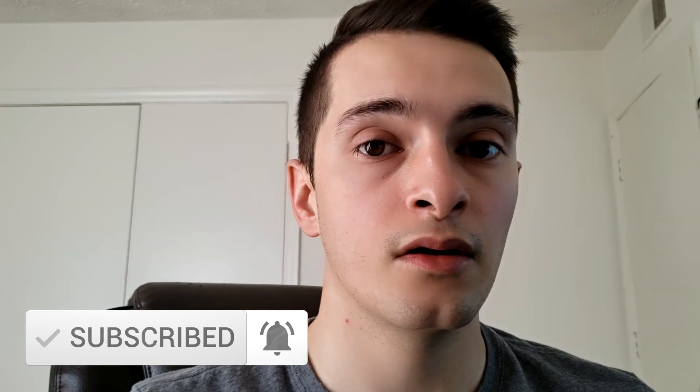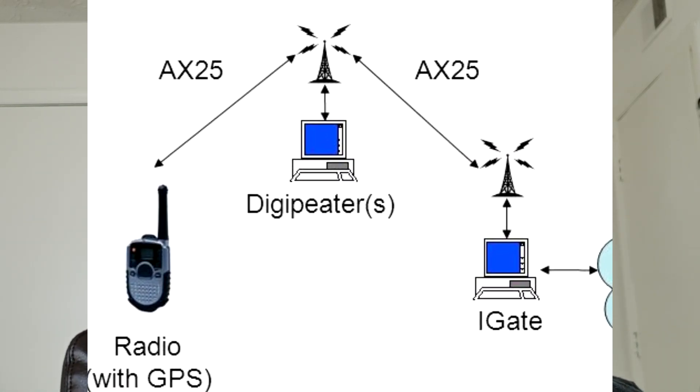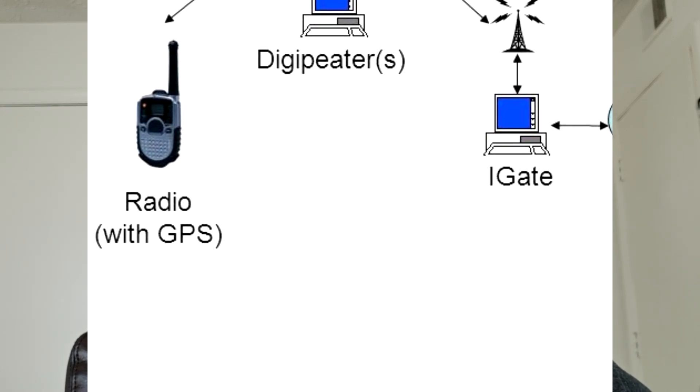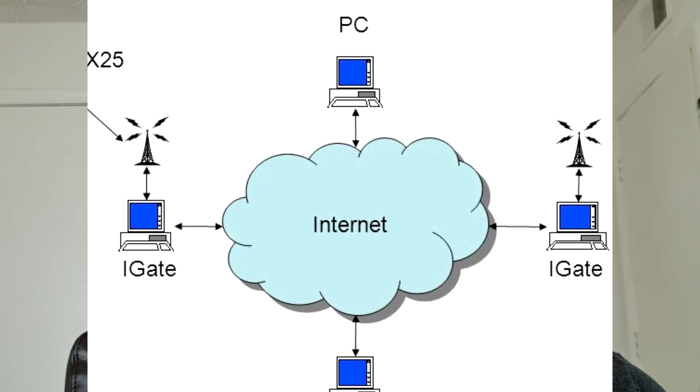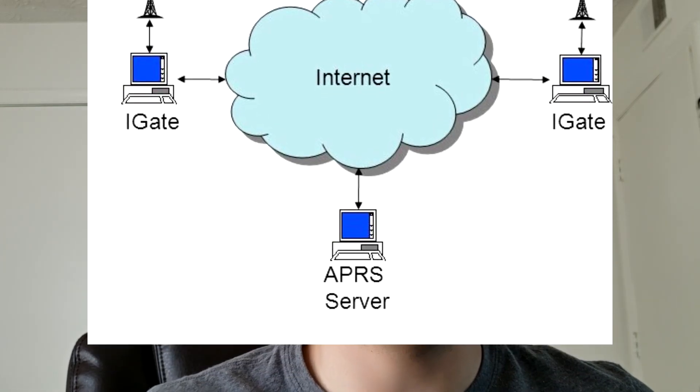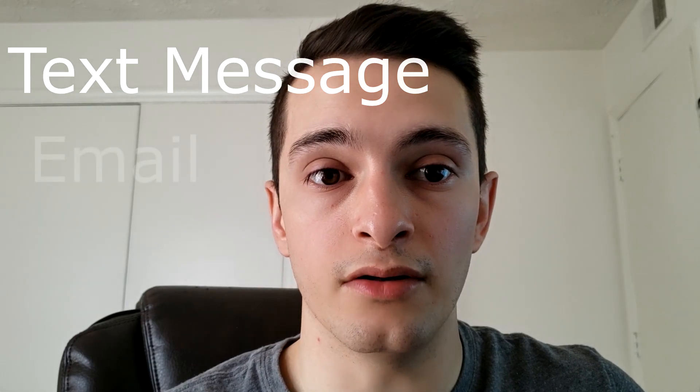Let's get a few concepts out of the way. The digipeater is pretty much like a voice repeater — it takes digital radio packets and sends them over its area. The difference is it's not full duplex, so it takes the packet, interprets it, and then repeats it. An iGate, often paired with a digipeater, is an internet linking system which takes digital radio packets and forwards them to online services. With an iGate you can send text messages, email, and upload beacons to APRS.fi, which is a global APRS network you can see in real time.